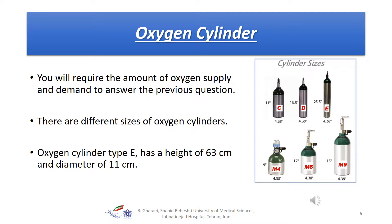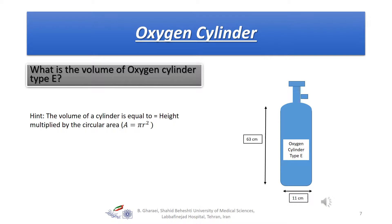To answer this question, you should know your oxygen supply and you should also know the demand. For oxygen supply, you should know that oxygen cylinders come in different sizes. Oxygen cylinder type E, which you can see in the figure, has a height of 63 cm and a diameter of 11 cm. To find out how much oxygen we have in a type E cylinder, we should know the volume of the cylinder.